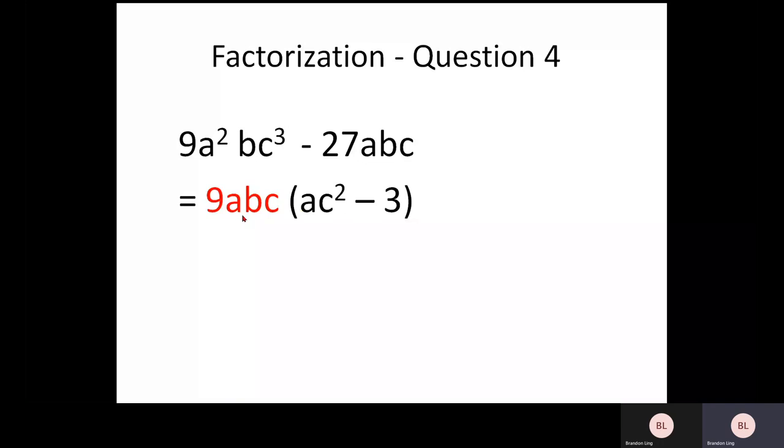So in fact, you can actually do a double checking of your answer. When you multiply in 9A, B, C with A, C squared, you get back the same answer here. And when you multiply 9A, B, C with a 3, you get 27A, B, C here.